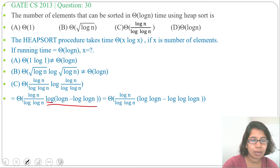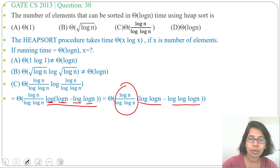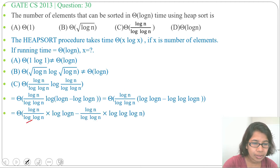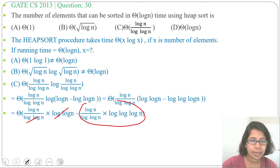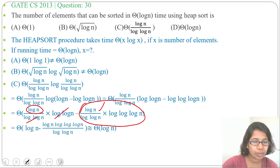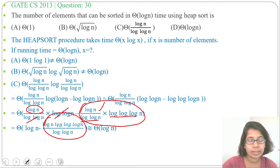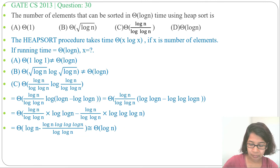Simplifying: we multiply log n / log(log n) with each term — log n · log n / log(log n) minus log n / log(log n) · log(log n). The log(log n) terms cancel in the second part, leaving a constant. So the expression reduces to approximately theta of log n, confirming option C.